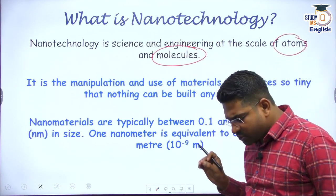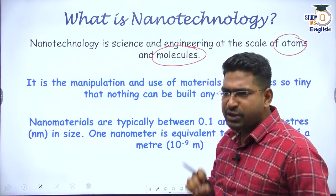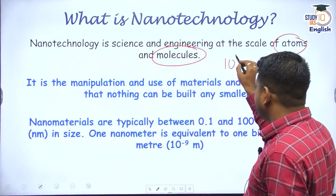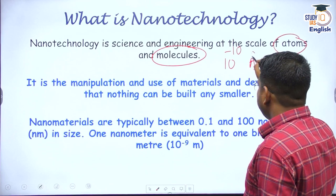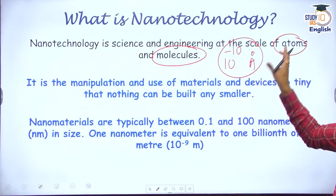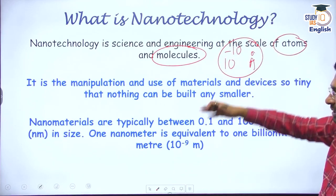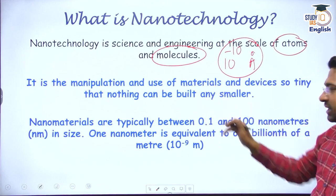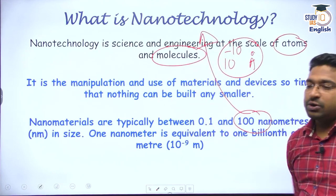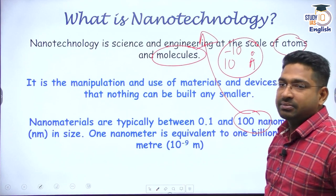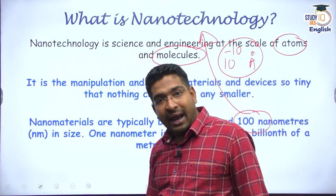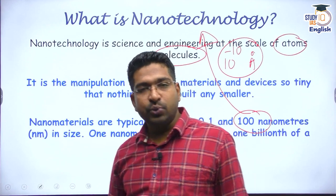In our science basics, we have understood what is the size of an atom. The size of an atom is mentioned in a unit called angstrom, of the order of 10 to the power of minus 10 — very close to the nano level. Anything below 100 nanometers becomes a part and parcel of nanotechnology and nanoscience. That means we are engineering at the level of atoms and molecules.